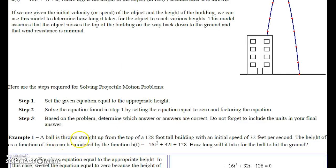Here's our problem. A ball is thrown straight up from the top of a 128-foot building with an initial speed of 32 feet per second. The height as a function of time can be modeled by this function. How long will it take for the ball to hit the ground? Let me show you how to do that.